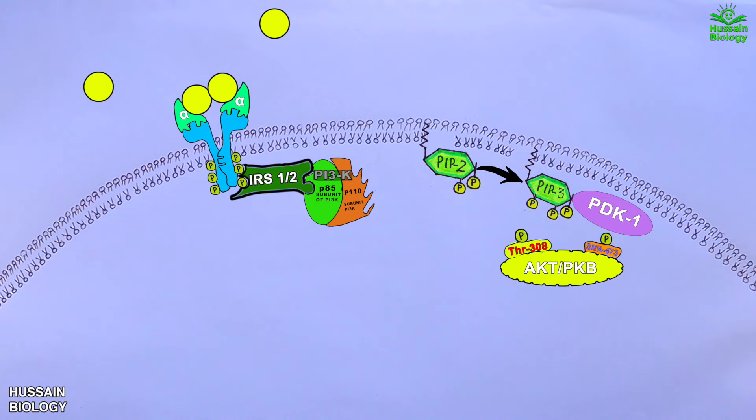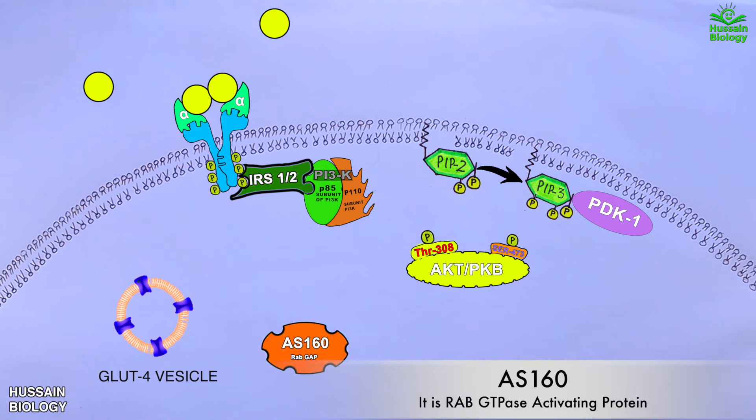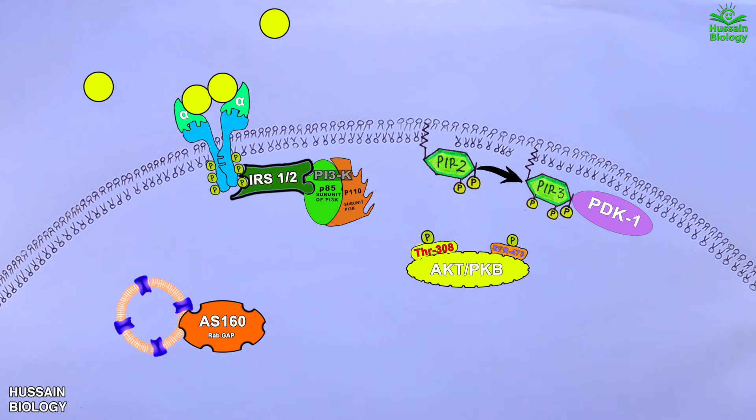Now let's keep the activated AKT protein here for some time. On the other hand, we have the GLUT4 vesicle which needs to be translocated to the plasma membrane for fusion, but its translocation is inhibited by AS160 protein. It inhibits the translocation of the GLUT4 vesicle towards the plasma membrane. But once we have AKT activated via insulin pathway, the AKT phosphorylates the AS160 at threonine 642 and serine 588, thereby inhibiting its activity.